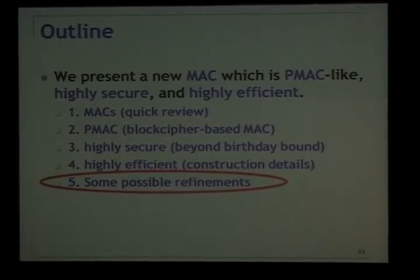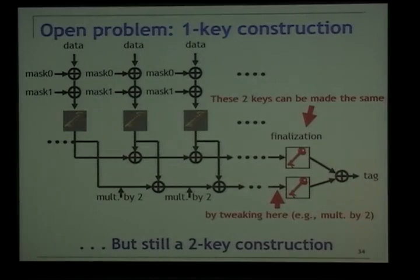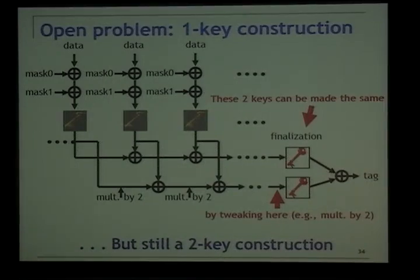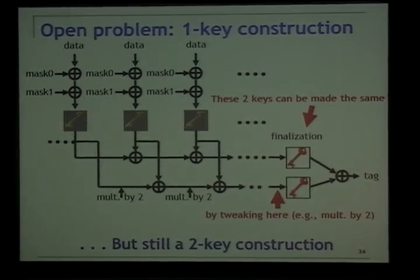Regarding possible improvements: the construction requires three keys, but we can reduce this to two keys by using the same key for both finalizations with a small tweak in front of one, achievable by multiplication by two. However, we currently don't have a way to make it a one-key construction. The independence between the key for the PMAC iteration and the finalization keys seems essential in many places of the security proof, so this remains an open problem.